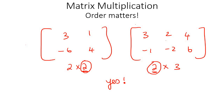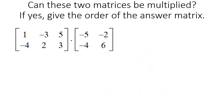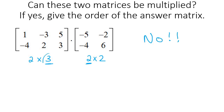Something else to add: after you multiply them, the answer matrix's order is determined by the outer numbers. So the answer is going to be a 2 by 3 matrix. Now let's do some examples. Can these matrices be multiplied? This one is 2 rows and 3 columns, the next one is 2 rows and 2 columns. Look at the middle numbers — are they the same? No, so these cannot be multiplied.